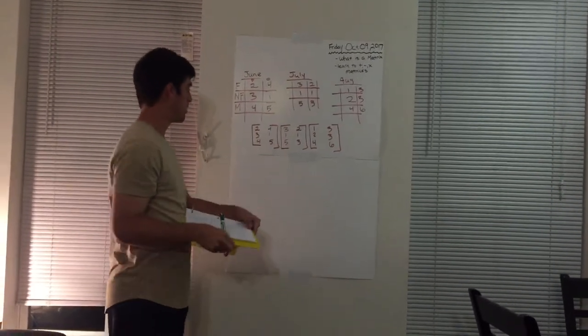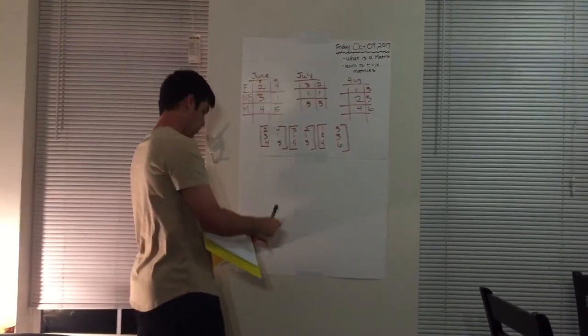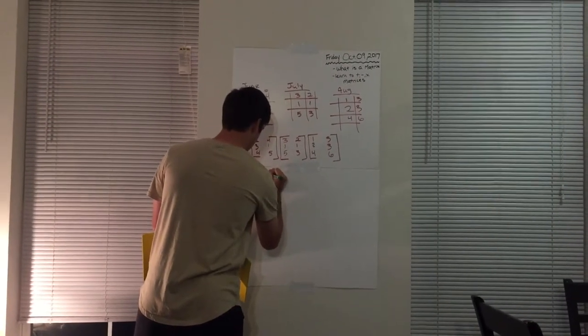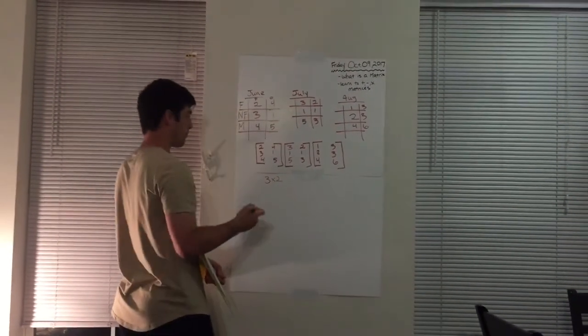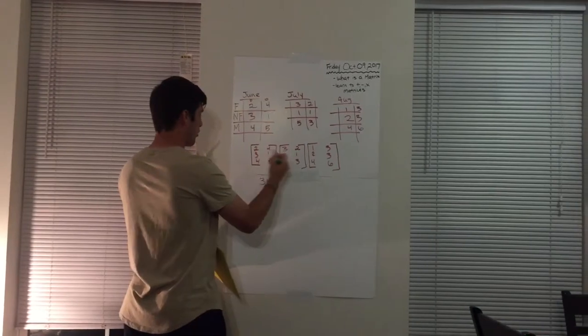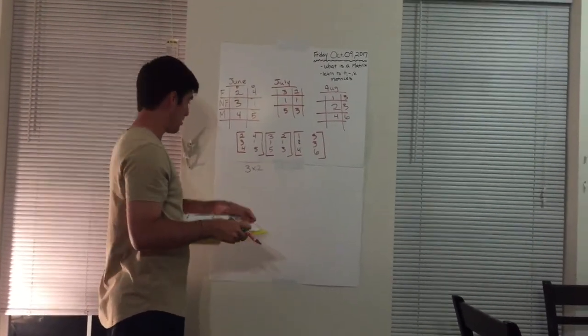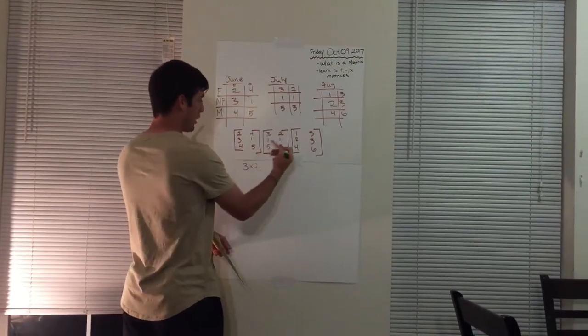So because all these matrices are all equal with a three by two, as you can see, there's three rows with two columns. So since these are all equal, we can add them together.